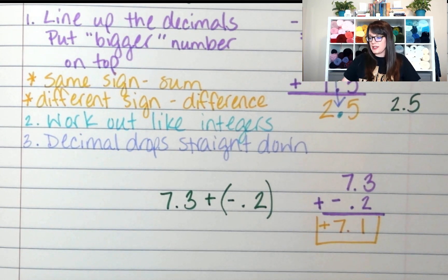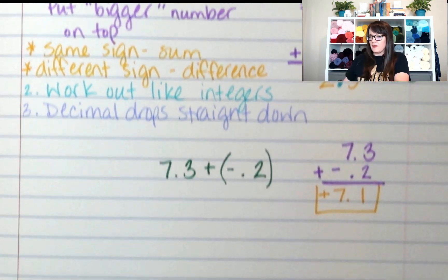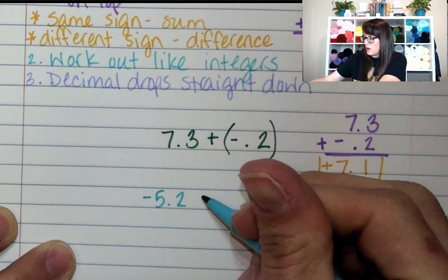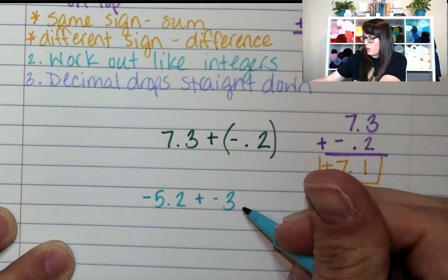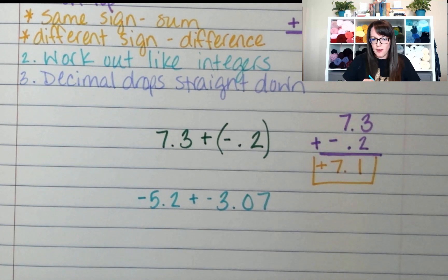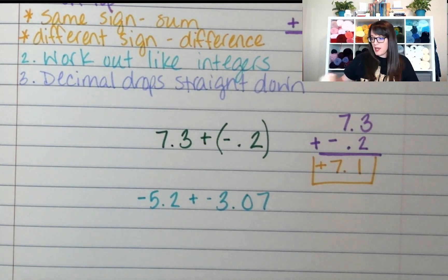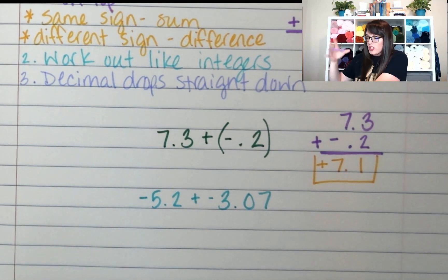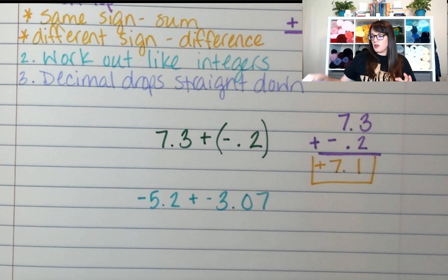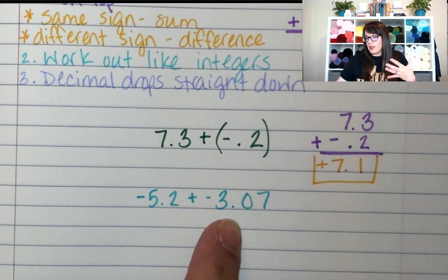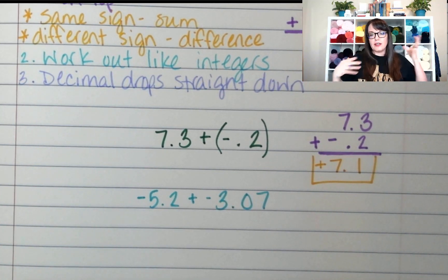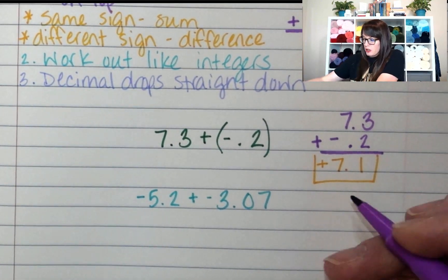Now, what if the signs are the same? What if you had negative 5.2 plus negative 3.07? I'm going to follow my same steps. Line up the decimals. Which number is bigger? The 5.2 has more to it than 3.07. Even though this number is longer, 5 is more than 3, so this number is going to go on top.